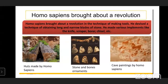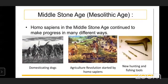Homo Sapiens also started to make huts. You can see in this picture that Homo Sapiens started making huts and used stone and bone ornaments. They also created cave paintings - you can see cave paintings in the third picture.